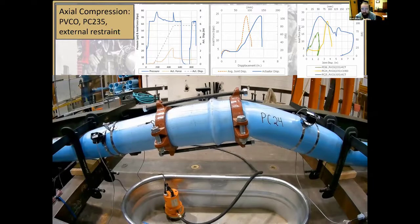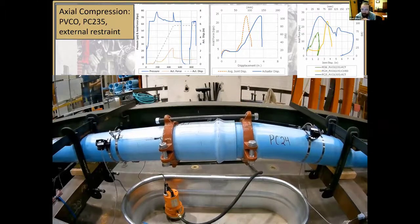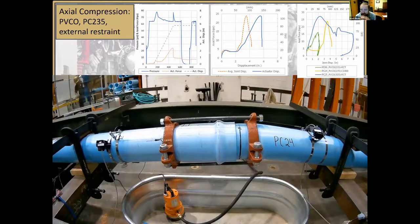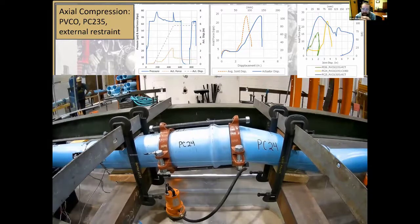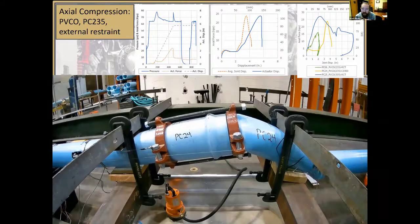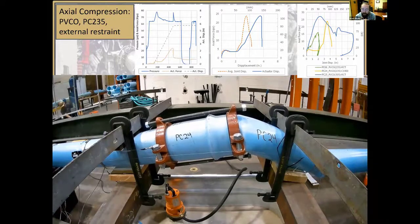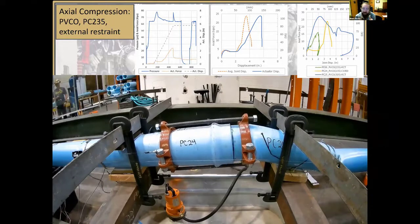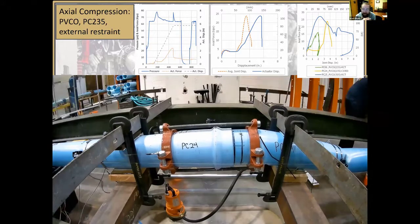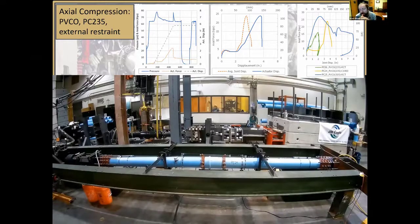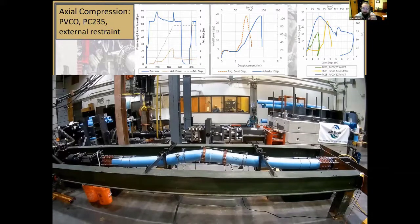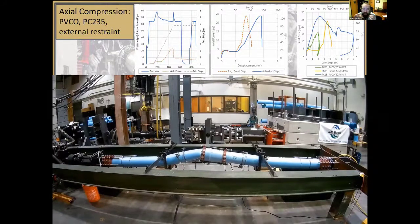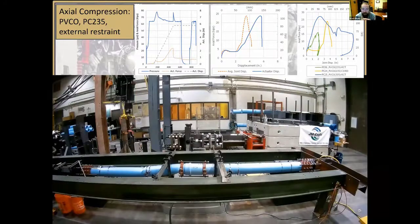We pressurize and depressurize the pipe several times to simulate conditions after a ground deformation event. We have string pots and LVDTs measuring the localized deformation at the joint to get an idea of how far the spigot is protruding into the bell — in this test it was about two inches of displacement of the spigot into the back of the bell, underneath the external restraint. The PVCO material is really quite interesting: the spigot itself will circumferentially buckle and move into smaller spaces while continuing to preserve the pressure barrier. The gasket is not affected and it continues to hold pressure.